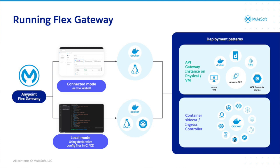Once the installation is complete, the Anypoint Flex Gateway can be configured to run in two modes. The first is the connected mode, where customers can connect their Flex Gateway installation to the Anypoint control plane for centralized management, observability, and security. Customers can view their gateways in Runtime Manager, add API instances, and apply policy configurations in API Manager. Connected mode enables customers to manage all of their APIs — Mule and non-Mule — from a single pane of glass, and extends the benefits of the Anypoint platform such as reuse, monitoring, and publishing of APIs with products like API Analytics, Anypoint Exchange, Anypoint Monitoring, etc.